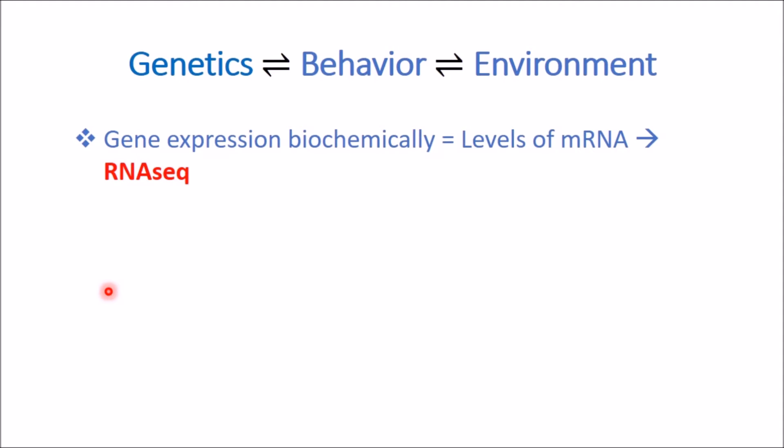We can do that via RNA-seq. Back in the day you would use microarray, but now more commonly we use RNA-seq, which is a shotgun whole-genome sequencing next-generation sequencing technique. Gene expression is influenced by environmental factors, including those within the internal environment as well as the external environment.